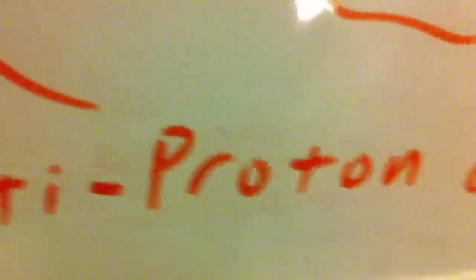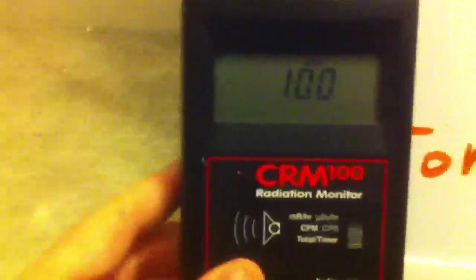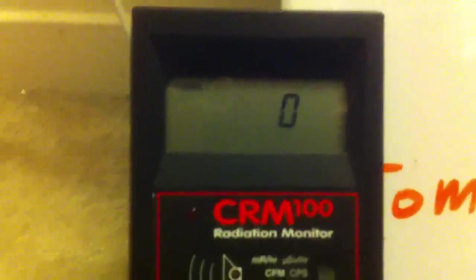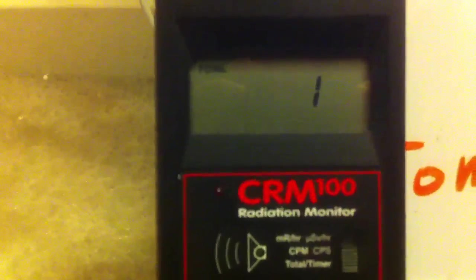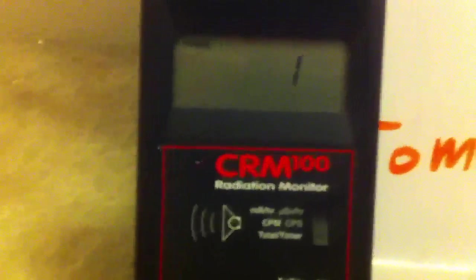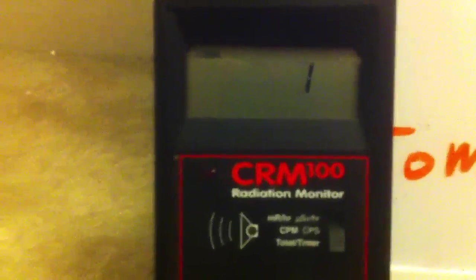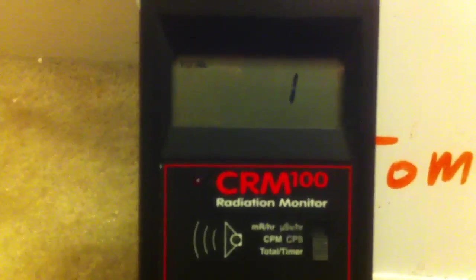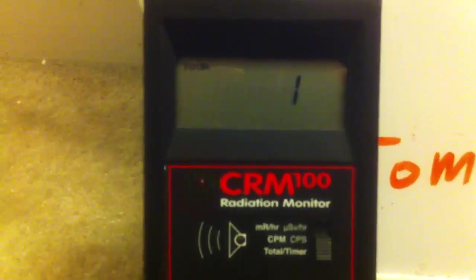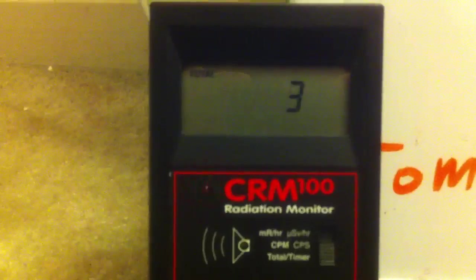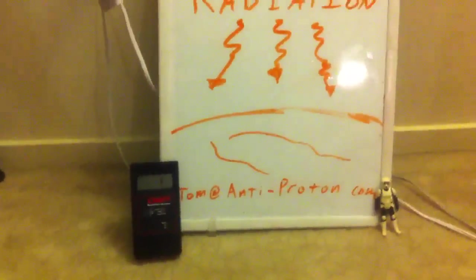Remember folks, that's Tom at Anti-Proton.com. Star Wars guy. Okay, I've turned on my Geiger counter. I want to see how much background radiation we pick up during the course of this video. Currently, my Geiger counter is set to total mode, meaning every time it ticks, the number will increment by 1. And it will continue to do this so that we can see during the entirety of this video how much random background radiation we pick up.